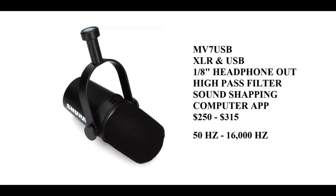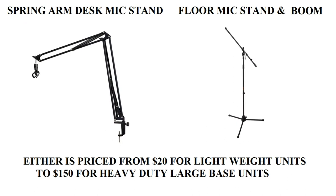The Shure MV7 has a frequency range of 50 Hz to 16,000 Hz, which is still within the range of the human voice. This mic won't record violins or acoustic guitar as well as a condenser mic, but it is sturdier and heavier. You can drop this and it usually doesn't hurt it — though I wouldn't recommend it.